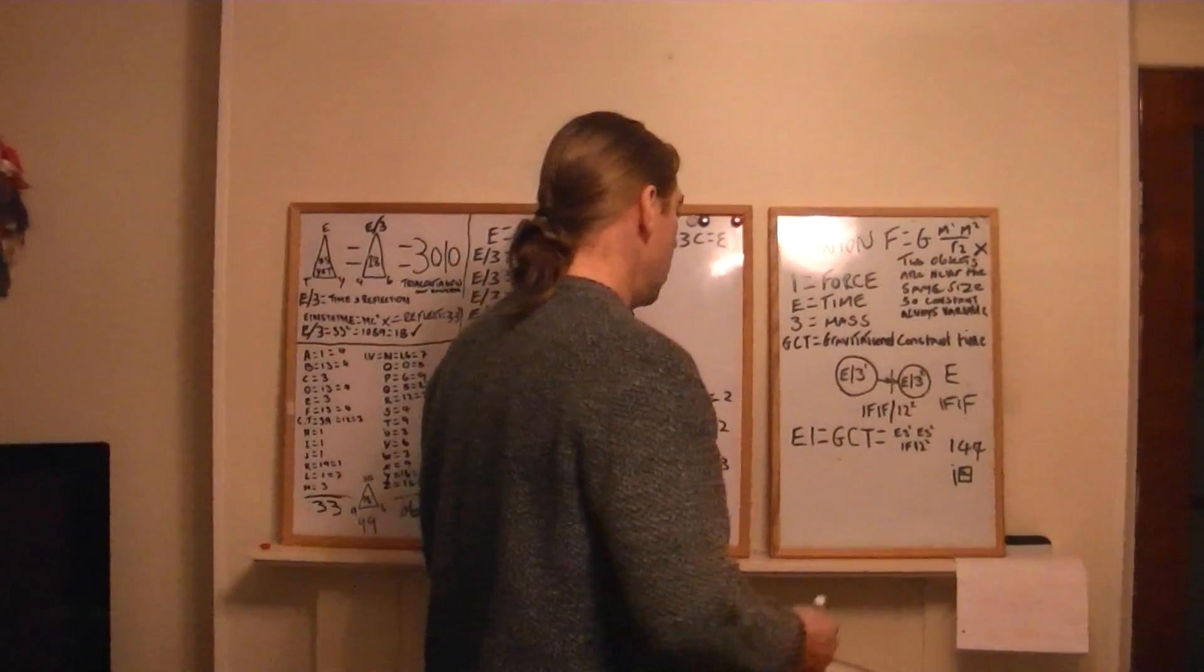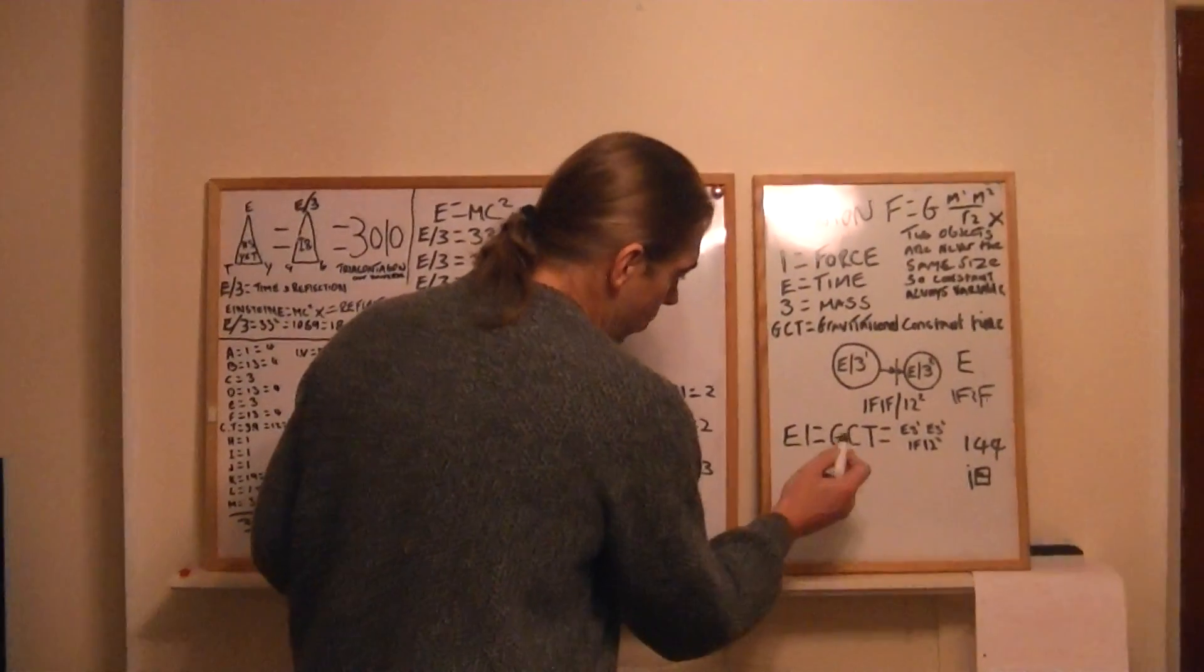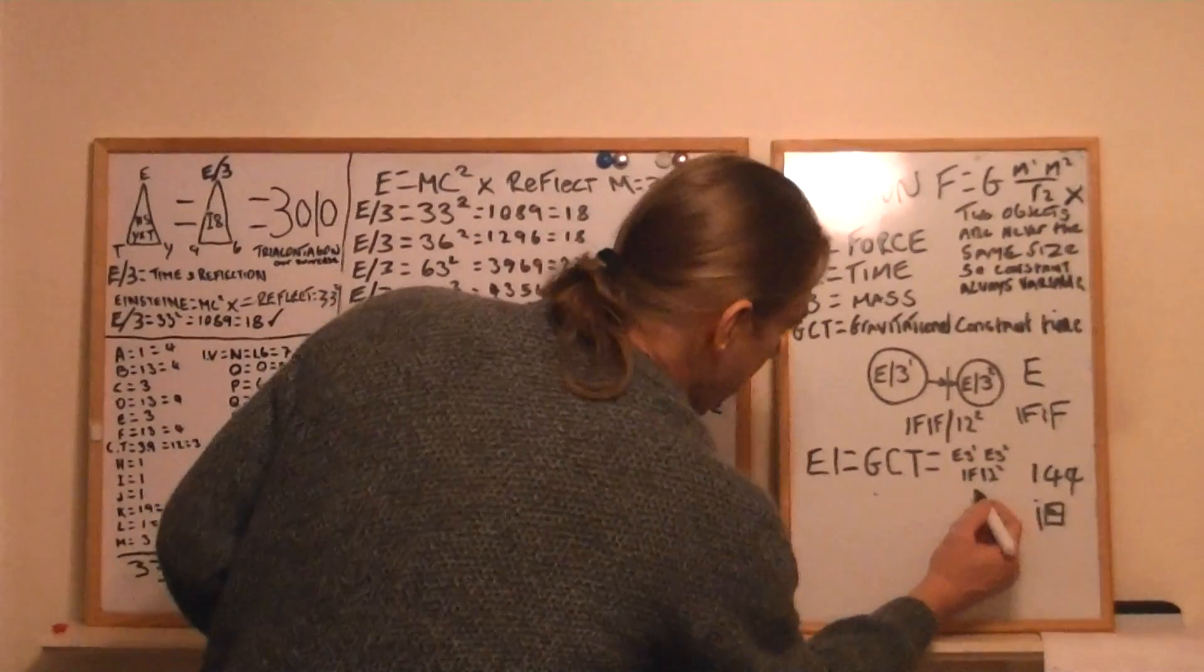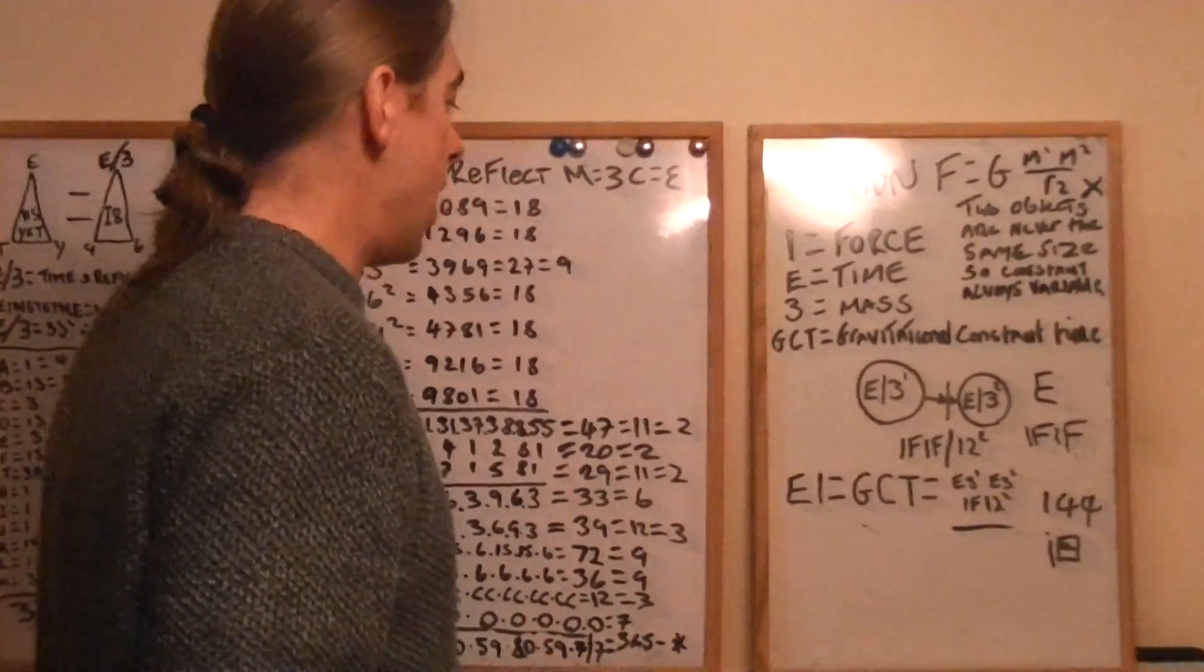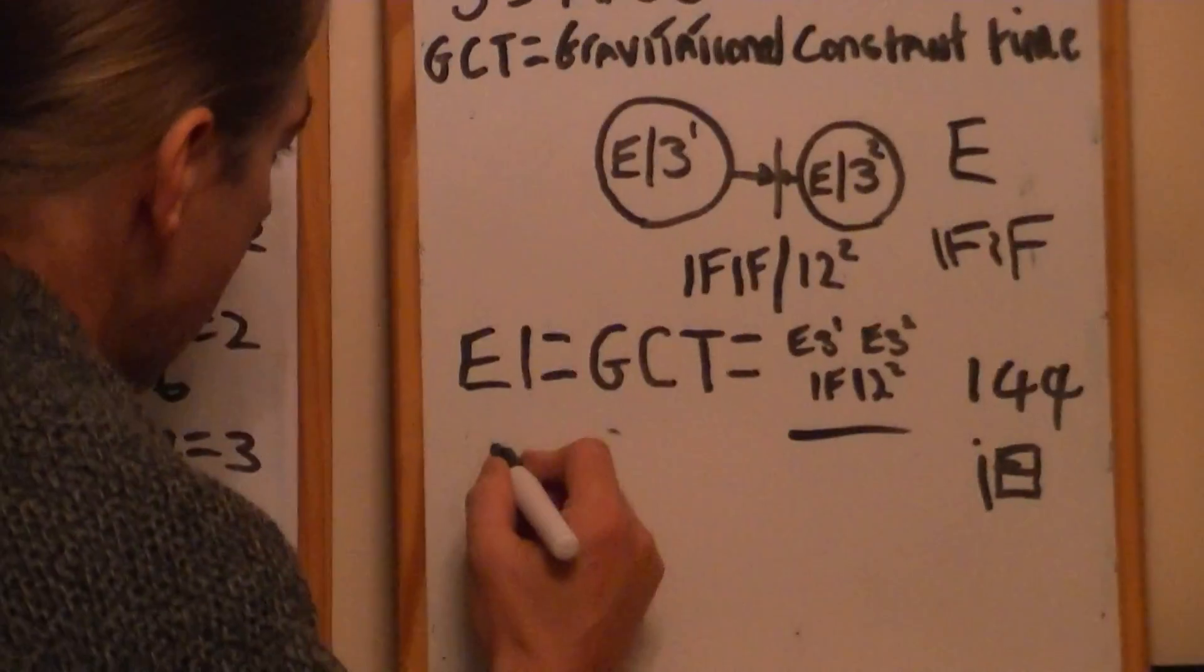So, we're back to Newton. The actual calculation, then, would be EI equals GCT equals if 12 squared. And just to prove it, reflect and see what you get.